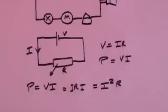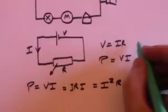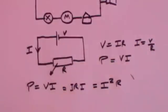So power can also be written I squared R. It's also true that if V equals IR, that I equals V over R.